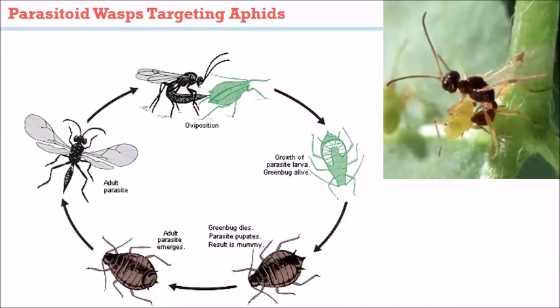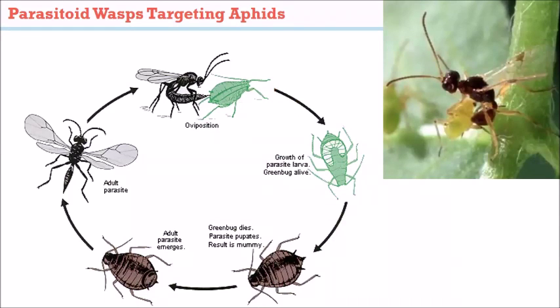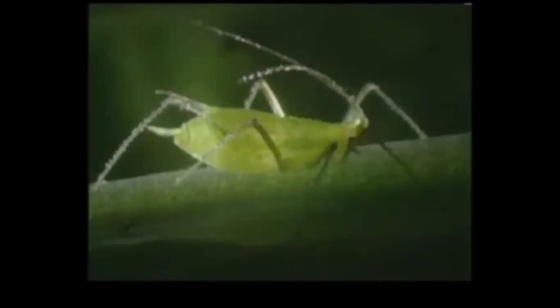Moving to parasitoids — wasps or flies that need another host to complete their life cycle. One group of parasitoid wasps targets aphids: the adult female lays a single egg within an aphid, and the larva feeds inside the still-living aphid. When the larva is ready to pupate, the aphid dies and becomes bloated and mummy-like. A single female can lay several hundred eggs, and she can detect which aphids have already been parasitized to avoid laying duplicate eggs.